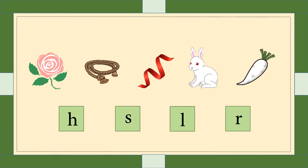Now we will make a circle. The letters are: first letter is H, second letter is S, third letter is L, and fourth letter is R. Since all the picture names begin with the 'R' sound, we will make a circle around the letter R.